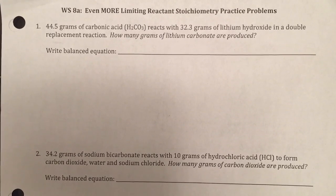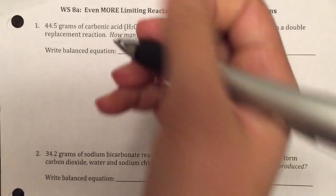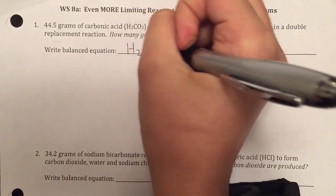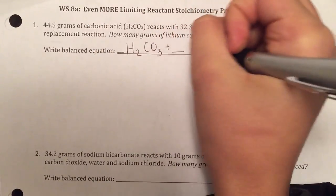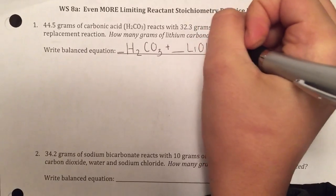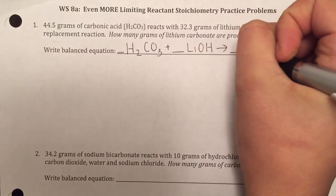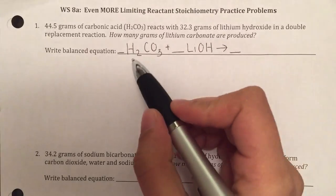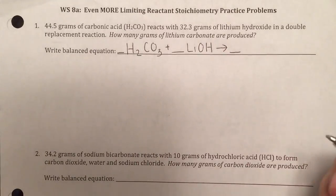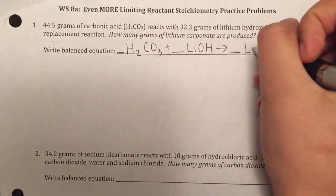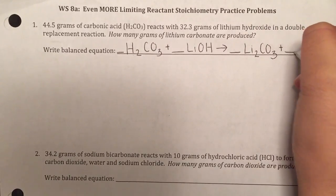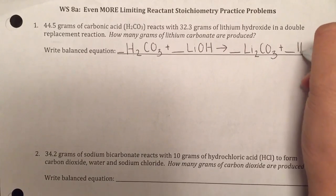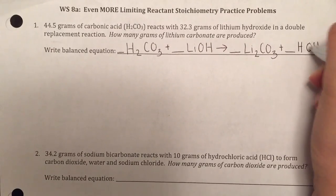Based upon the information we're given, we know we have carbonic acid, which is H2CO3, plus lithium hydroxide. That's going to be a double replacement, so the hydrogen and the lithium are going to swap, which makes lithium carbonate, and we have to exchange charges there. Then we're going to make water, and for balancing purposes, I'm going to write that as HOH.